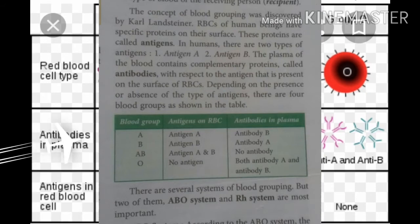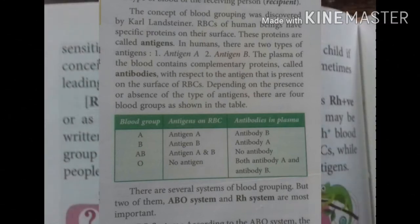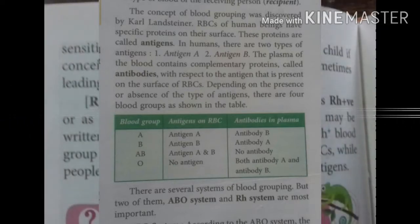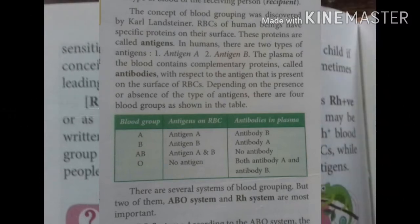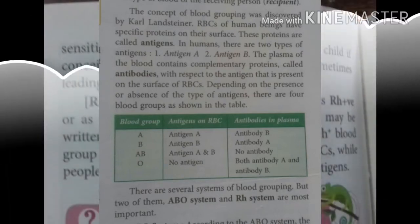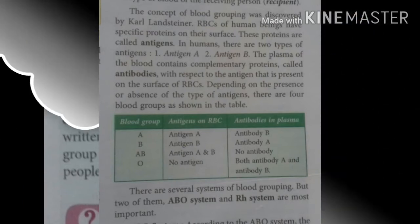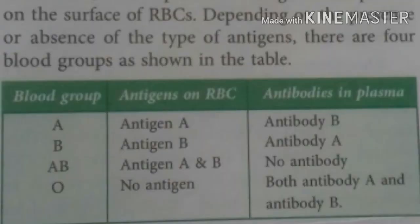There are two antigens: antigen A and antigen B. The plasma of the blood contains complementary proteins called antibodies with respect to the antigens. Antigens are present on the surface of the RBCs. Depending on the presence or absence of the type of antigen, four blood groups are found. Grouping is based on presence or absence of one or both antigen A and antigen B. In normal blood, if an antigen is present in RBC, its corresponding antibody is absent in plasma.